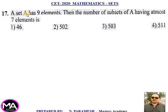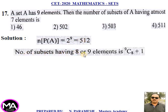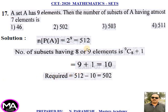17th question. A set A has 9 elements. The number of subsets of A having at most 7 elements is? Solution: N(P(A)) = 2^9 = 512. Number of subsets having 8 or more elements = 9C8 + 9C9 = 9 + 1 = 10. Therefore required answer = 512 − 10 = 502. That is option second.